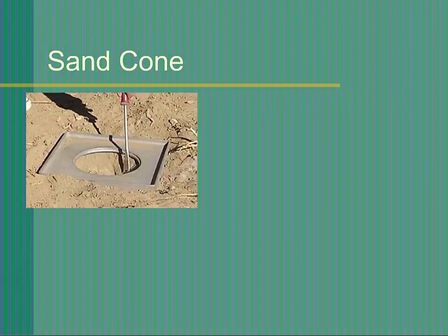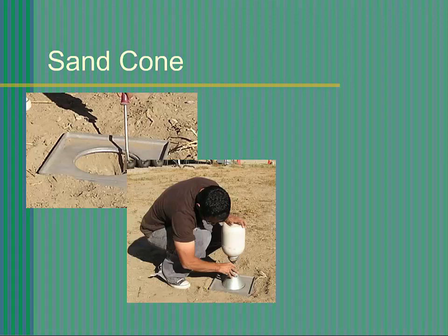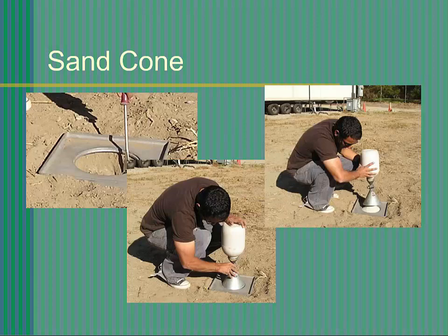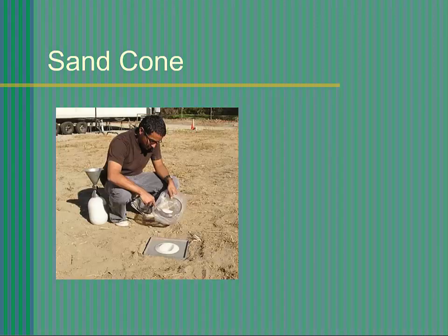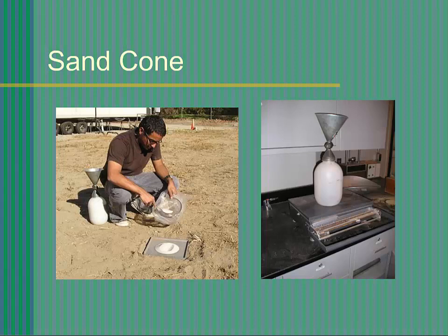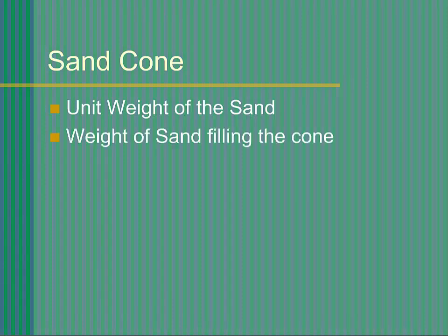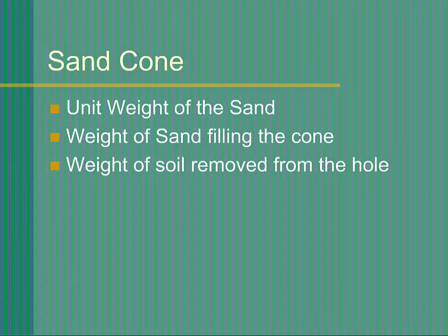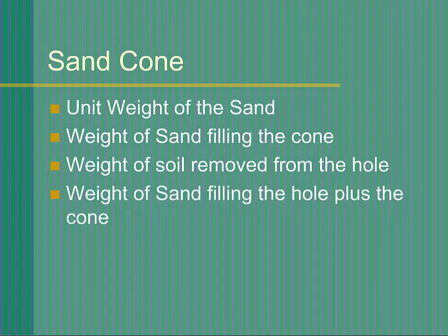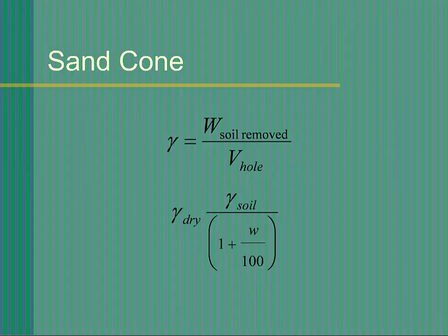Be sure the rim of the base plate is clean, then place the sand cone on the base plate ensuring that the cone fits properly in the rim. Open the valve and allow the sand to flow into the hole — this will take a few minutes. Do not shake or vibrate the cone when the sand is flowing. When the sand has stopped flowing, close the valve and remove the sand cone. Return to the lab and weigh the sand cone assembly and the bag of soil. After weighing the bag of soil, take a sub-sample of the soil and determine the moisture content using normal procedures. You should now have determined the following quantities: unit weight of the sand, weight of the sand filling the cone, weight of the soil removed from the hole, and weight of sand filling the hole plus the cone. From these quantities, you can compute the total unit weight and the dry unit weight of the in-situ soil. This concludes this presentation.